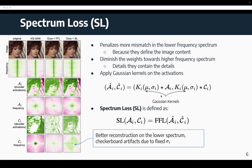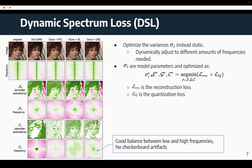In order to address the shortcomings of the spectrum loss, we propose to optimize the variance of sigma_i instead of treating it as deterministic. This allows the model to dynamically adjust to different amounts of frequencies needed. The sigma_i are model parameters optimized together during training. The results show a good balance between low and high frequencies with no checkerboard artifacts.